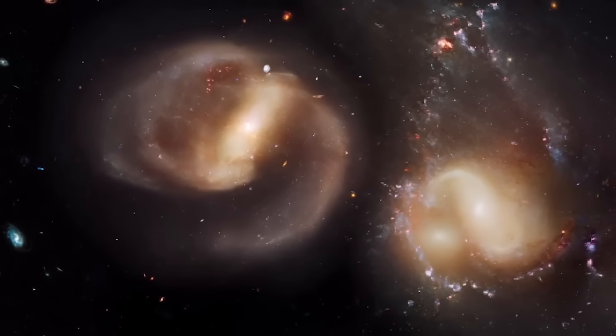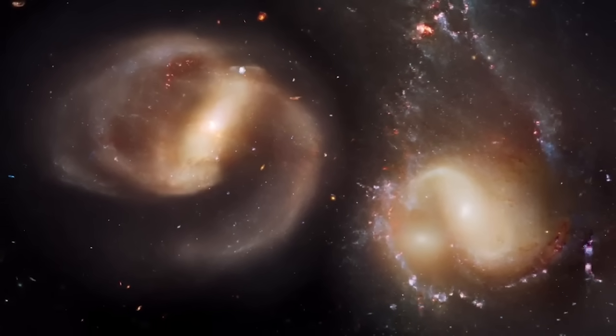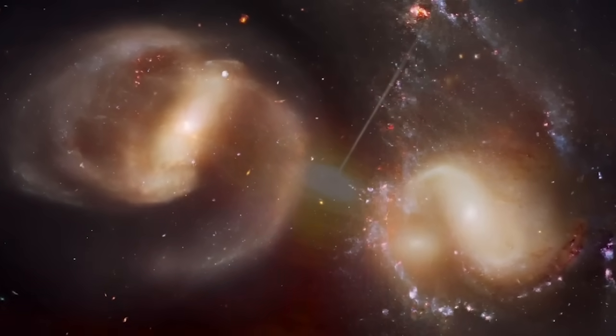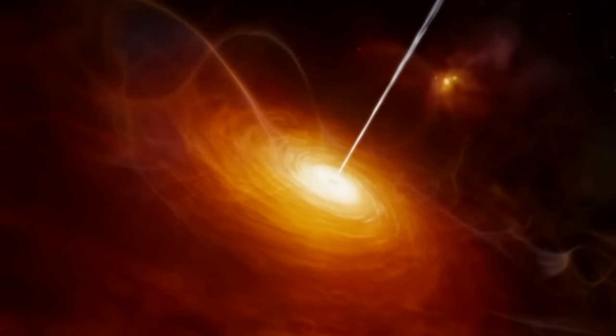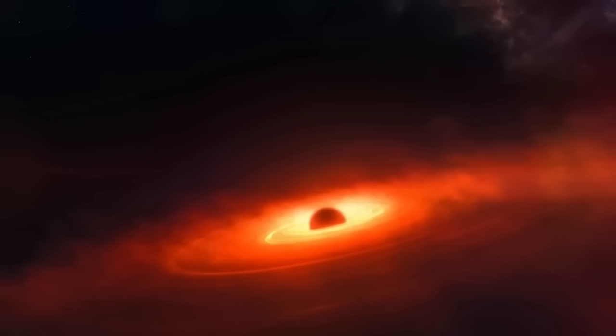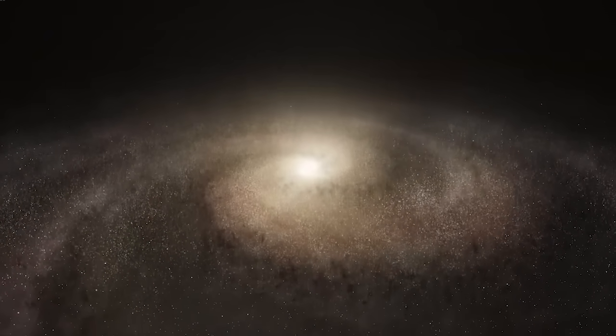Among the four associated galaxies of Stephan's Quintet, NGC 7319 is of particular interest to astronomers. This galaxy hosts an active galactic nucleus with a luminous energy equivalent to 40 billion times that of the Sun. This energy comes from a supermassive black hole with a mass of 24 million solar masses.